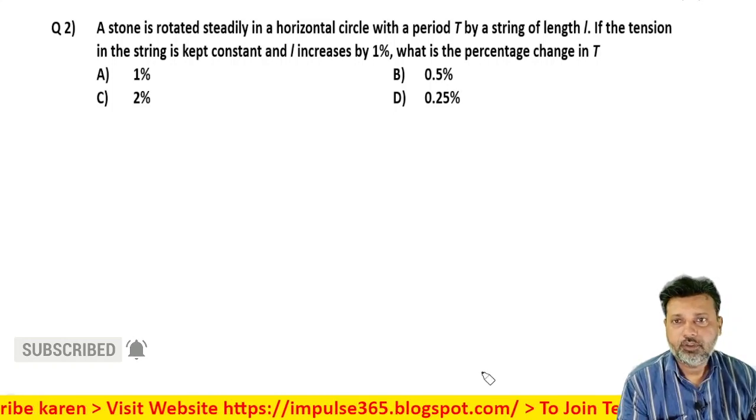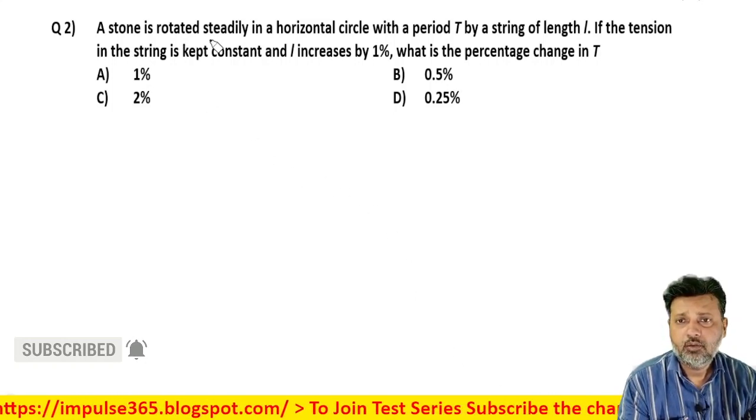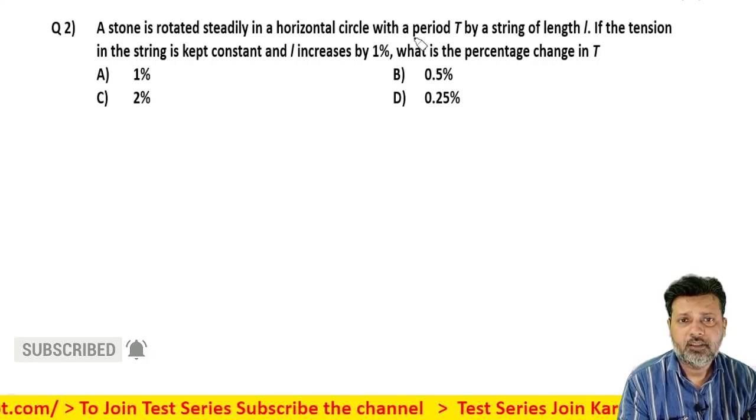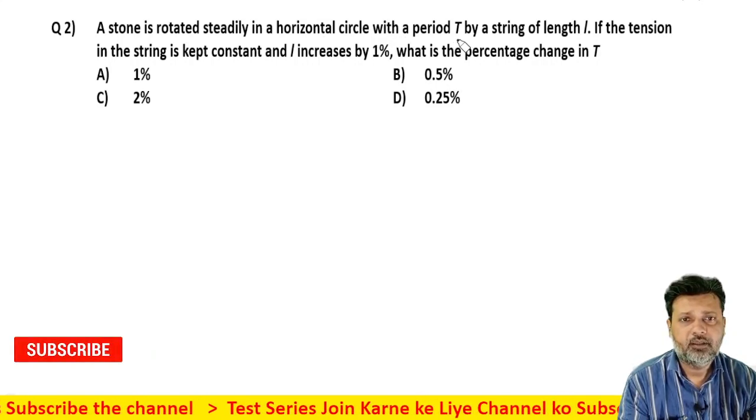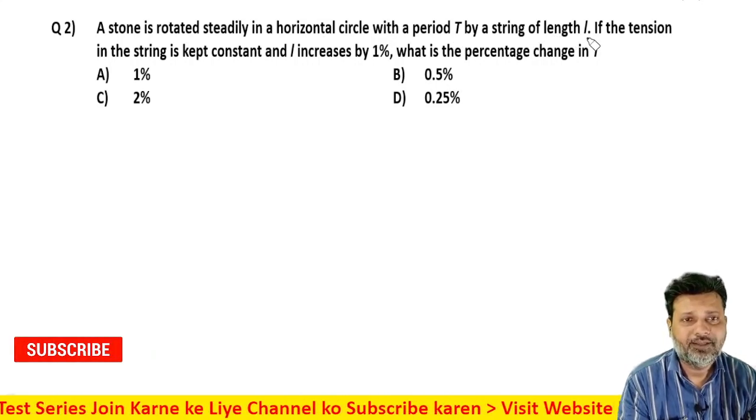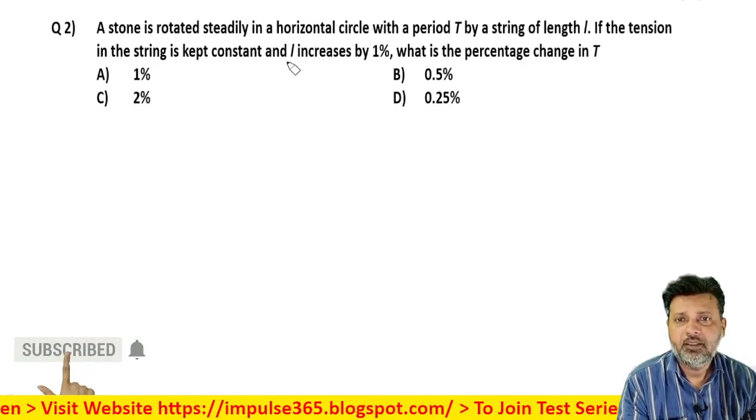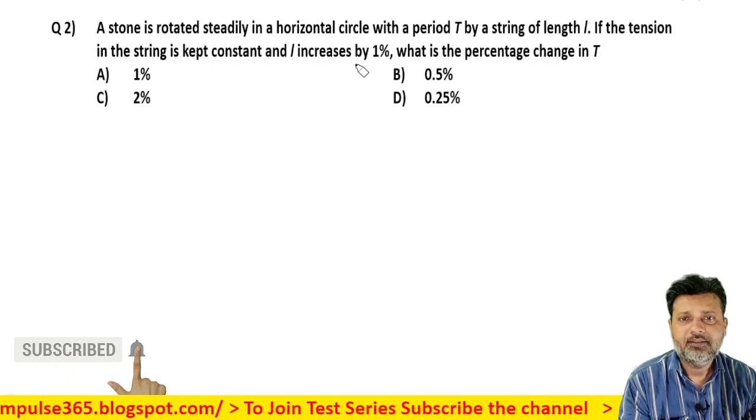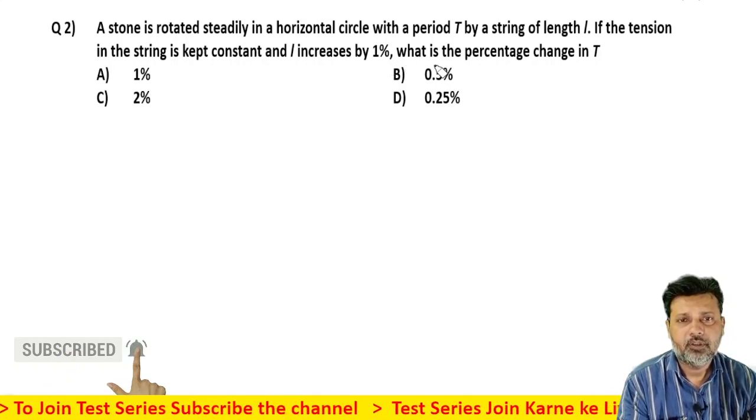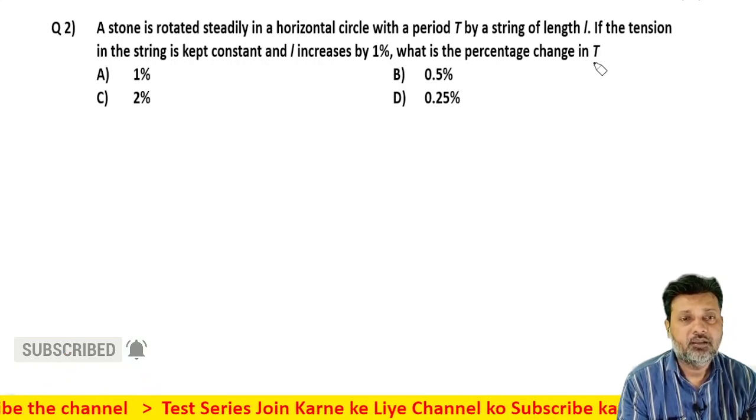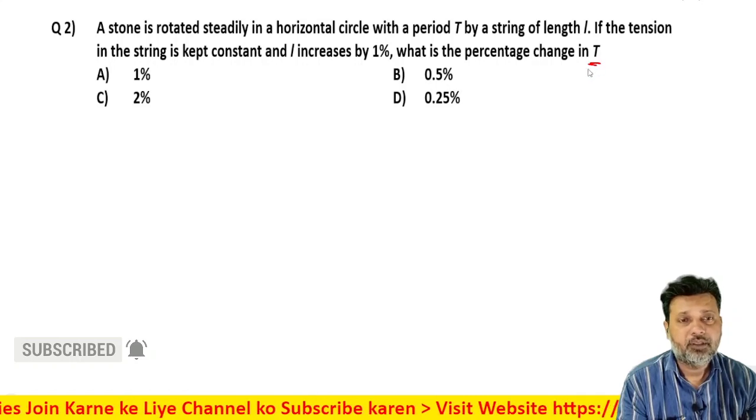Hello, next question. A stone is rotated steadily in horizontal circle with a period T by a string of length L. If the tension in the string is kept constant and L increases by 1%, what is the percentage change in time period?